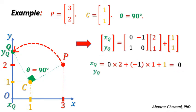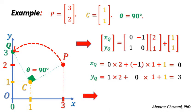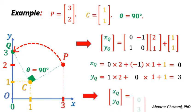Also, Y of point Q is equal to 1 times 2, plus 0 times 1, plus 1, that is equal to 3. Thus, we find the coordinates of the rotated point Q as 0 and 3.